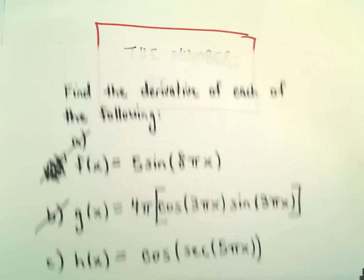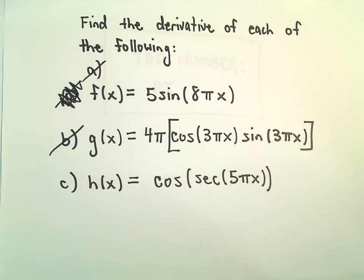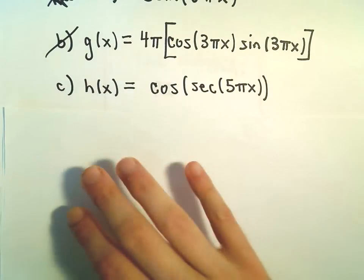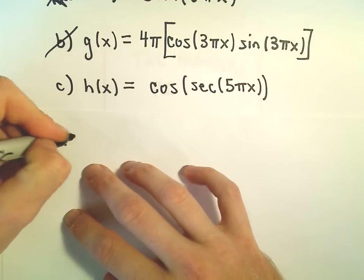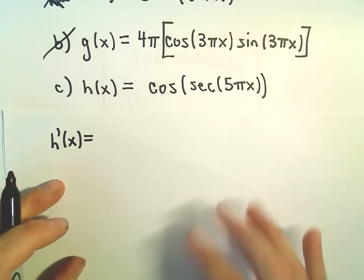All right, here we're going to do one more derivative problem involving pi. We've got h of x equals cosine of secant of 5 pi x. We'll have to use the chain rule a couple times on this problem.